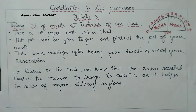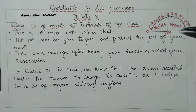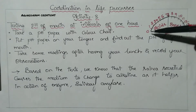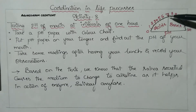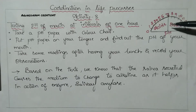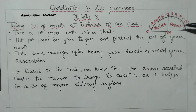pH is the amount or number of H+ and OH- ions present in a particular substance. The amount of ions present determines if that substance is an acid or base. We divide substances on a pH scale of 0 to 14. pH below 7 are acids, and pH 7 to 14 are bases or alkalines.